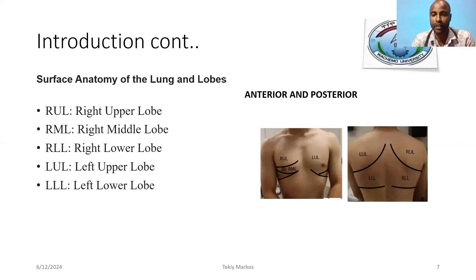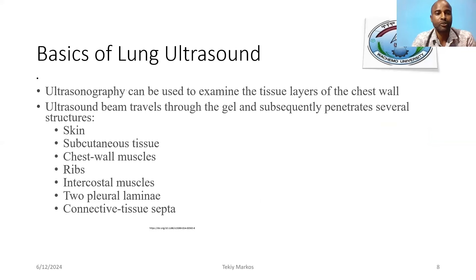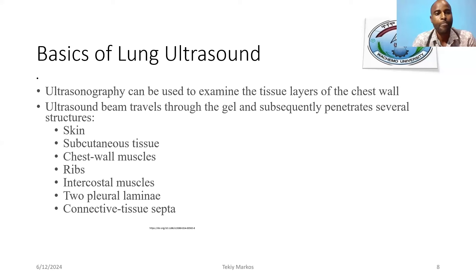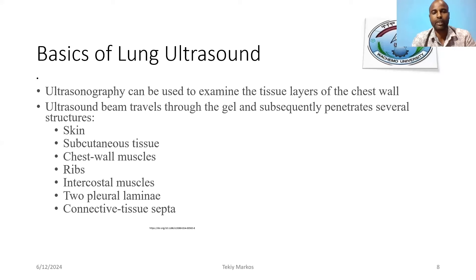There are specific sites — both anterior and posterior — for scanning. As the figure shows, there is the right upper lobe, right middle lobe, and right lower lobe, and the left upper lobe and left lower lobe. While scanning, the ultrasound beam travels through different layers after applying gel: skin, subcutaneous tissue, chest wall muscles, ribs, intercostal muscles, and the two pleural lamina and connective tissues.